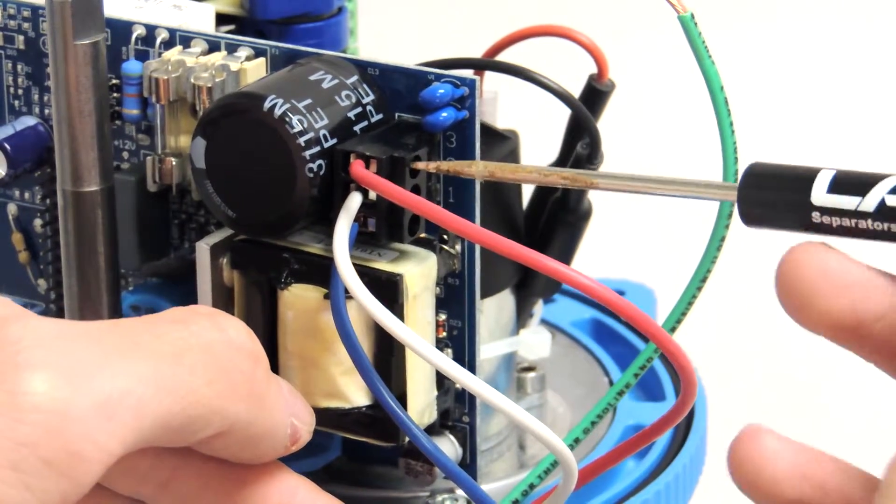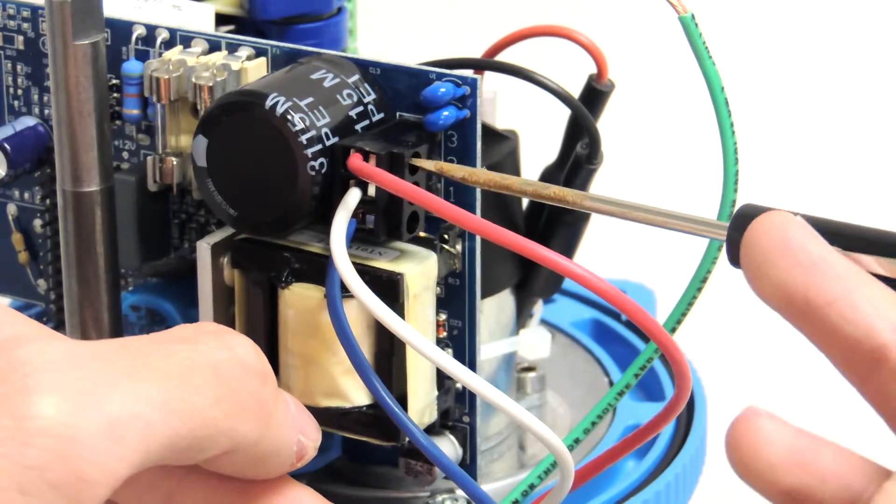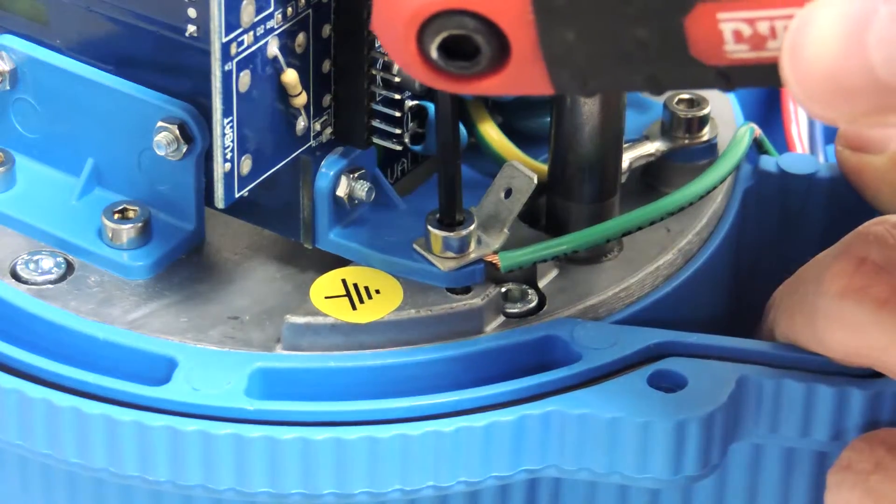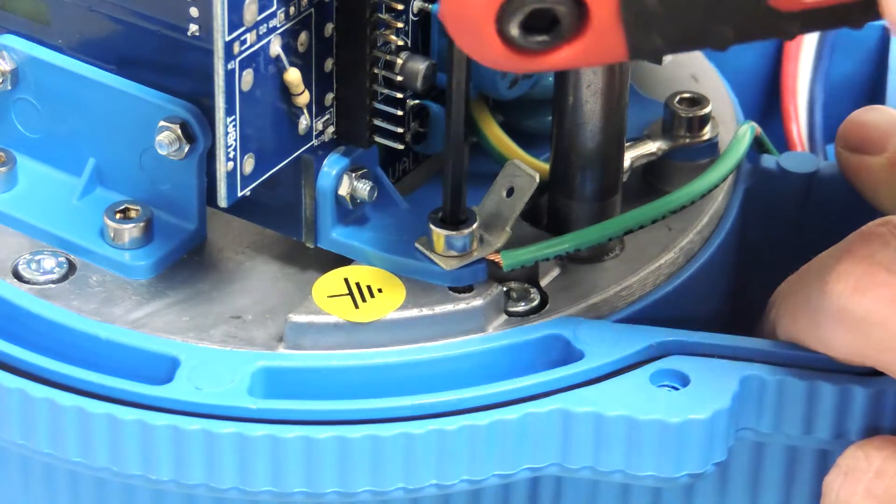Put the white wire in port number two and the red wire in port number three. Connect the green wire to the ground screw inside the ABV2.